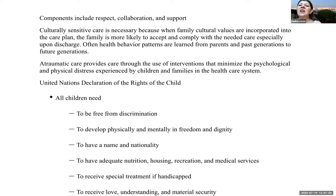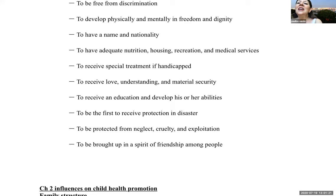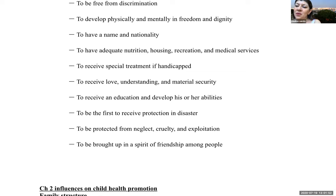The United Nations Declaration of the Rights of the Child is an instrument to incorporate the full range of human rights for children. All children need to be free from discrimination, to develop physically and mentally in freedom and dignity, to have a name and nationality, adequate nutrition, housing, recreation and medical services, special treatment if handicapped, love and understanding, education, protection in disasters, protection from neglect and cruelty, and to be brought up in a spirit of friendship among people.